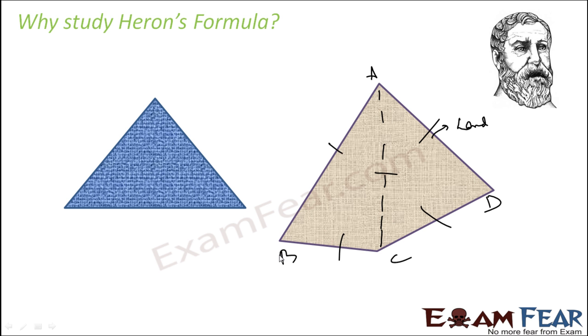Because you know the length of all these sides. You can actually measure A, B, B, C, C, D, A, D and A, C. So once you know the length of these sides, you can actually find the area of triangle using Heron's Formula.